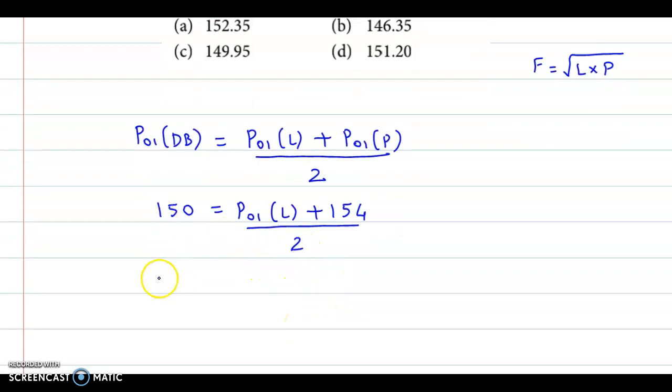Now we further calculate. 2 into 150, that gives 300, is equal to Laspeyres index plus 154. Therefore, we get Laspeyres index as 300 minus 154. So 300 less 154, this comes to 146.